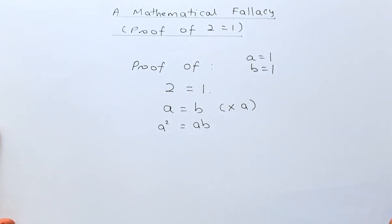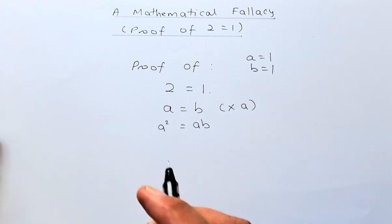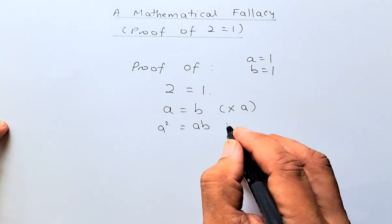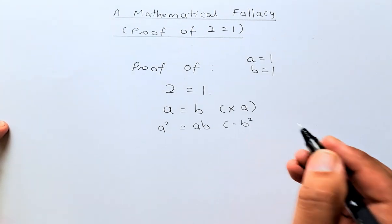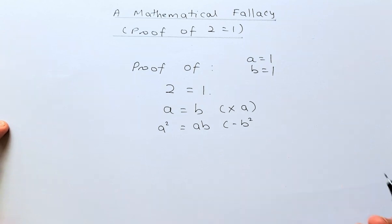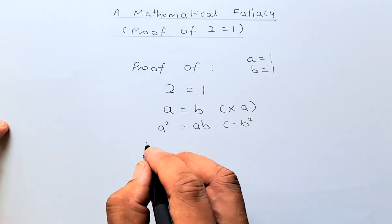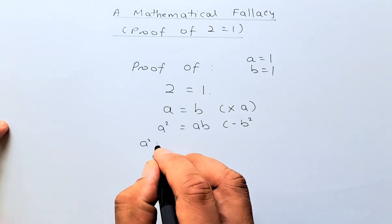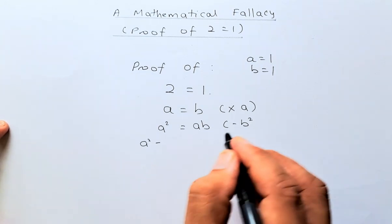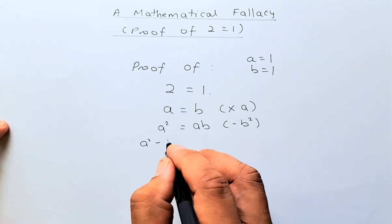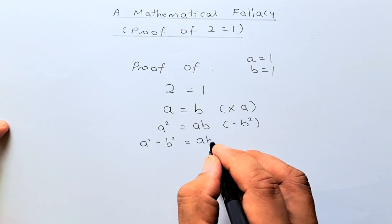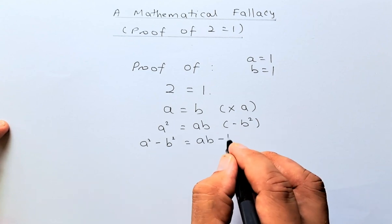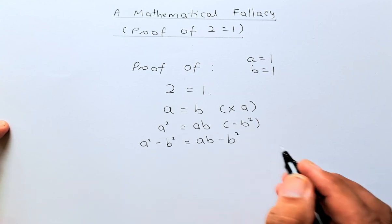Next thing we're going to do is to take away B squared from the equation. So when we take away B squared from the equation, the left-hand side will become A squared minus B squared and the right-hand side becomes AB minus B squared.